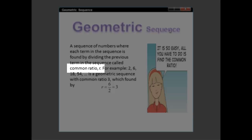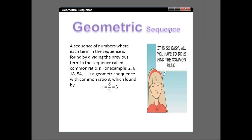For example, we have 2, 6, 18, 54, which is a geometric sequence with common ratio 3. This is found by r = 6/2 = 3, where r is the common ratio.